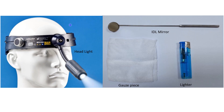The equipment needed to perform indirect laryngoscopy consists of: a headlight — an LED light; the IDL or straight mirror; a gauze piece to pull out the tongue; and a lighter. The flame from the lighter is used to heat the mirror end so that fog from the mouth will not cause hindrance to our view.